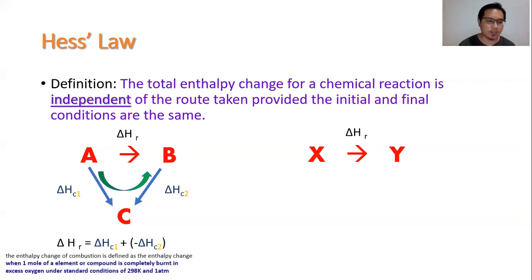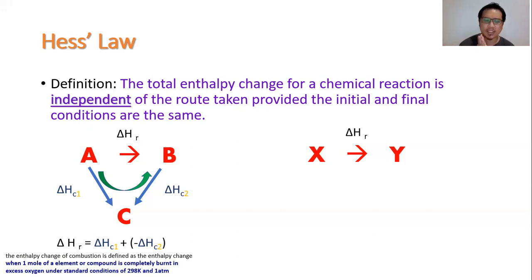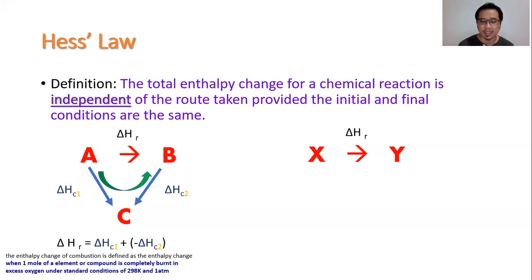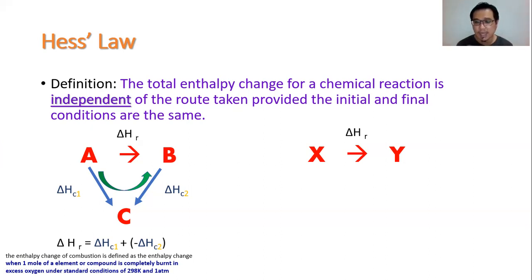Before moving on, make sure you understand the enthalpy change of combustion. There will be cases where you need to multiply the enthalpy of combustion appropriately based on the number of moles given. The enthalpy of combustion is defined as the enthalpy change when one mole of an element or compound is completely burned in excess oxygen under standard conditions of 298 K and 1 atm. If the element or compound being burned is more than one mole, you need to multiply the enthalpy change accordingly.